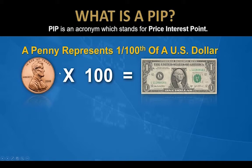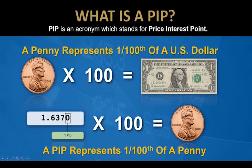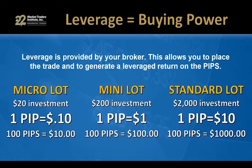What we're trying to do in the forex market is capture what are called PIPs — Price Interest Points. There are 100 pennies in a U.S. dollar, and a PIP represents a unit of measure smaller than a penny. Just like there are 100 pennies in a dollar, there are 100 PIPs in a penny, so a PIP represents one one-hundredth of a penny. To find out how much each PIP you capture is worth, you utilize leverage provided by your broker, which gives you the opportunity to generate a leveraged return on the PIPs you capture.